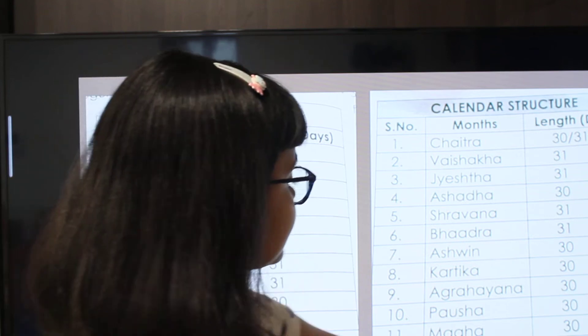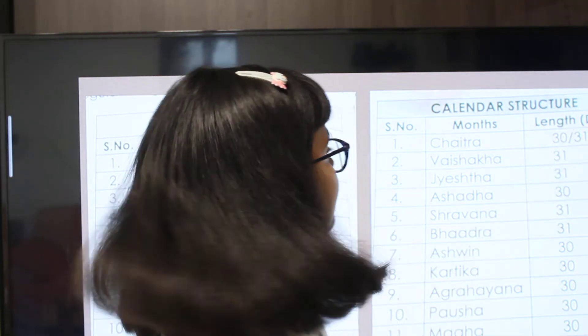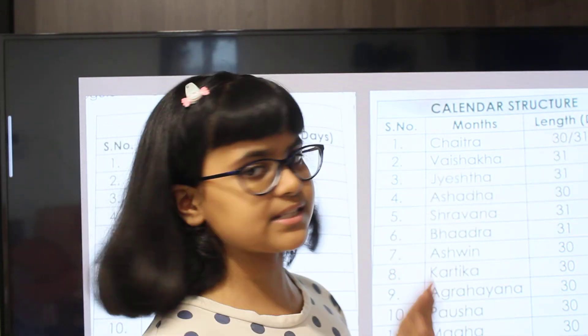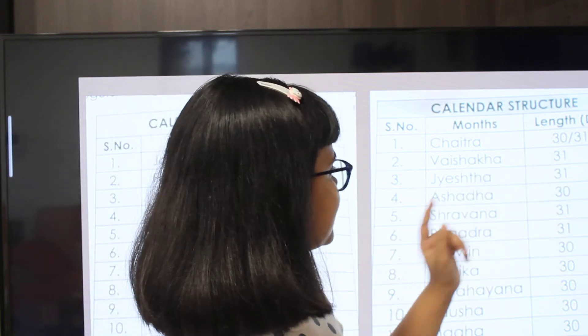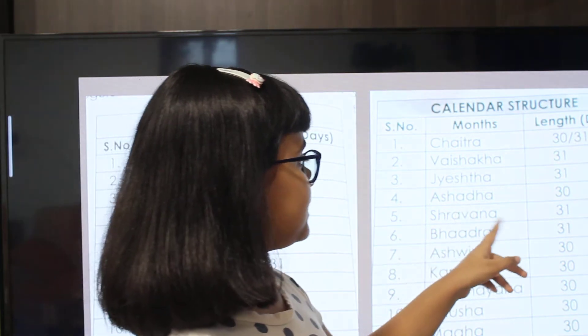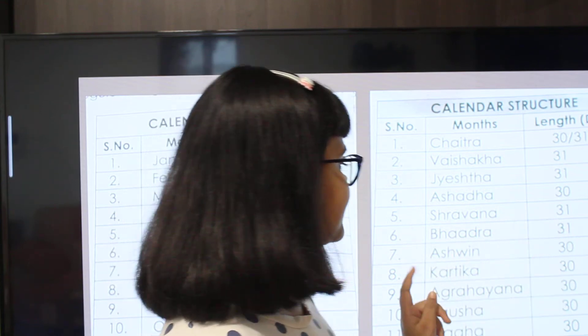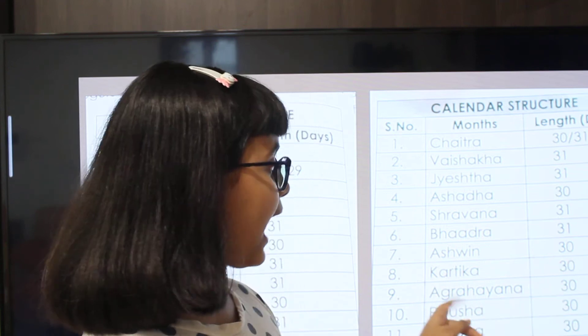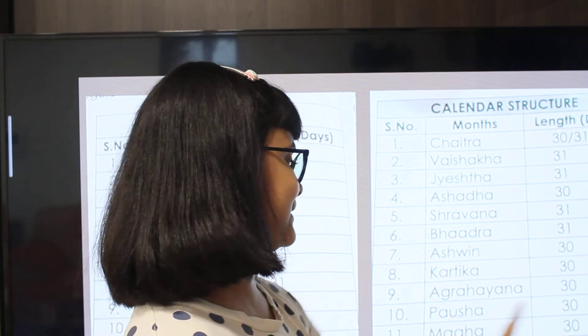Now for the Saka calendar months: Chaitra has 30 or 31 days; Vaisha, 31 days; Jyeshtha, 31 days; Ashadha, 30 days; Shravana, 31 days; Bhadra, 31 days; Ashvin, 30 days; Kartik, 30 days; Agrahayan, 30 days; Posh, 30 days; Magh, 30 days; and Fagun, 30 days.